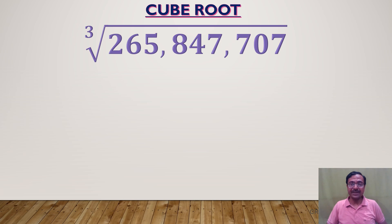Look at the number here: 265,847,707—huge number, right? Which number's cube gives me this nine-digit number? For that we have to follow three steps.